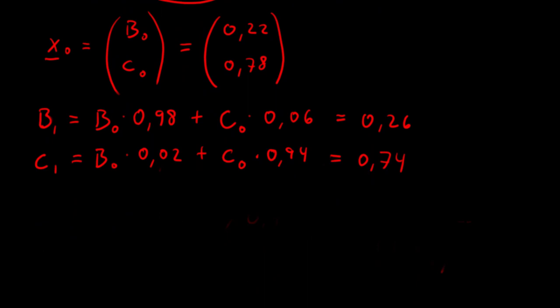And we may be observing that this can be rewritten as a matrix system. So if we say that x1 is the population vector at the first year, that consists of the population in Brno and the capital at year 1.